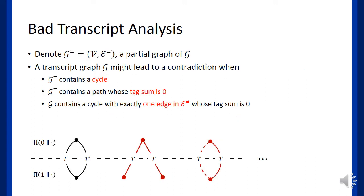The next step is to define the bad transcript. Some transcript graphs might lead to a contradiction. Let's denote G_eq, a partial graph of G, consisting of vertex set V and set of solid edges. If G_eq contains a cycle, then the system of equations may become inconsistent. And if G_eq contains a path whose tag sum is equal to zero, one will get the equality of two different unknowns, but this leads to contradiction, because different inputs should be mapped into different outputs through permutations.